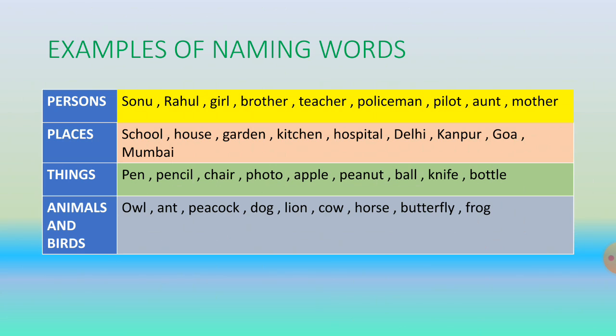Now, a few examples of naming words. Persons: Sonu, Rahul, girl, brother, teacher, policeman, pilot, aunt, mother — these are examples of persons.